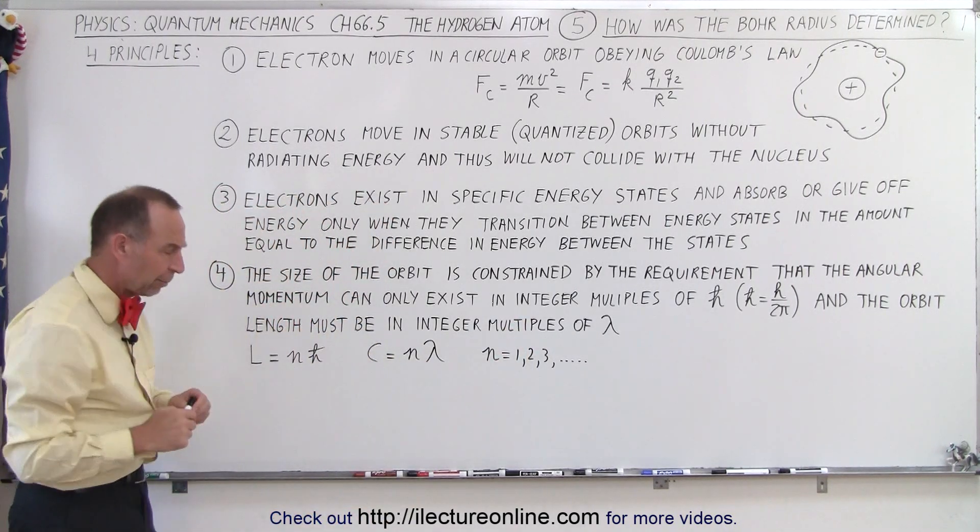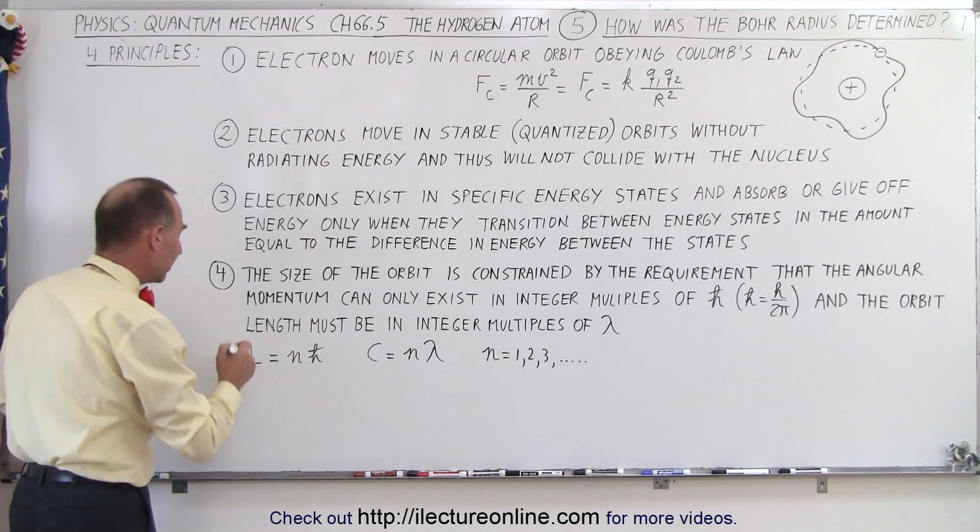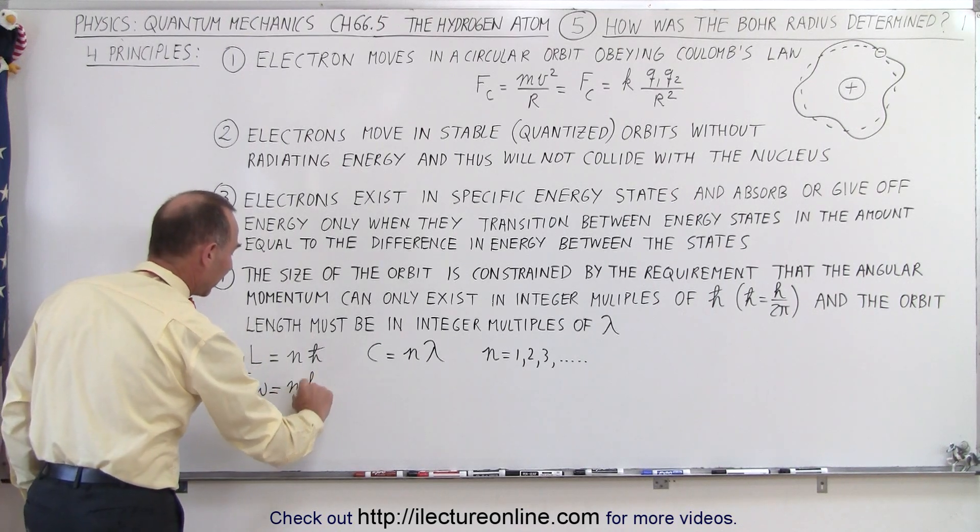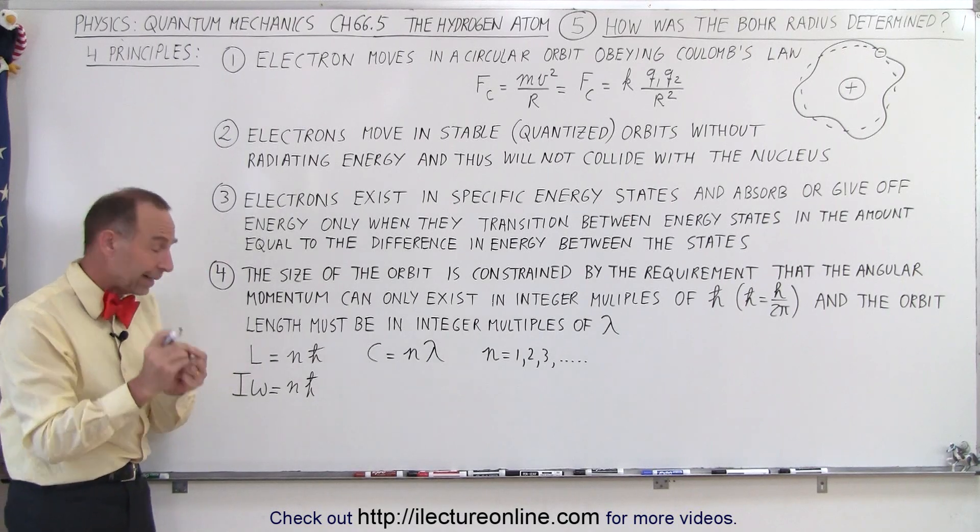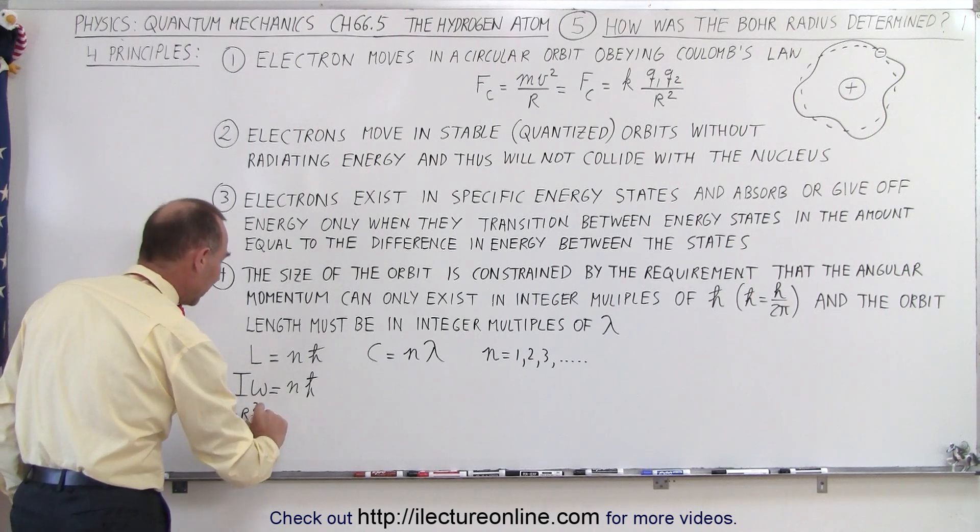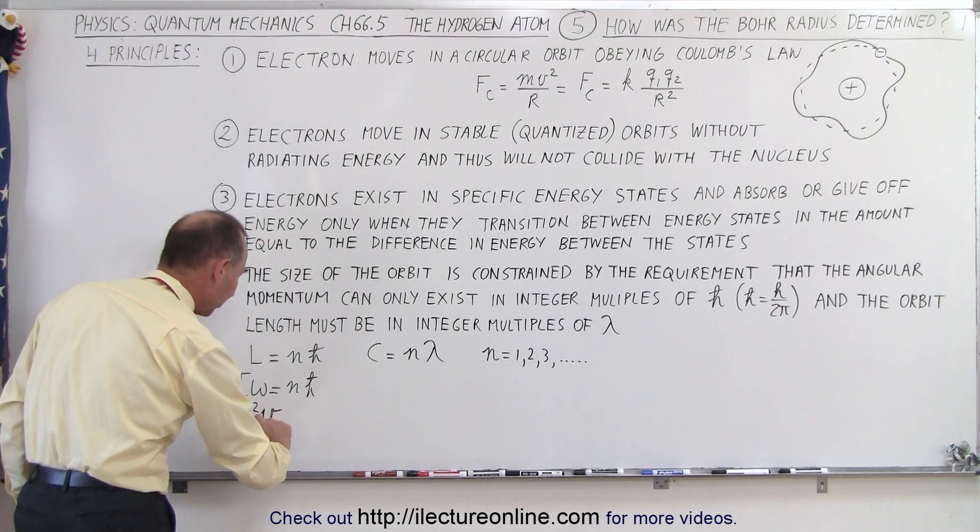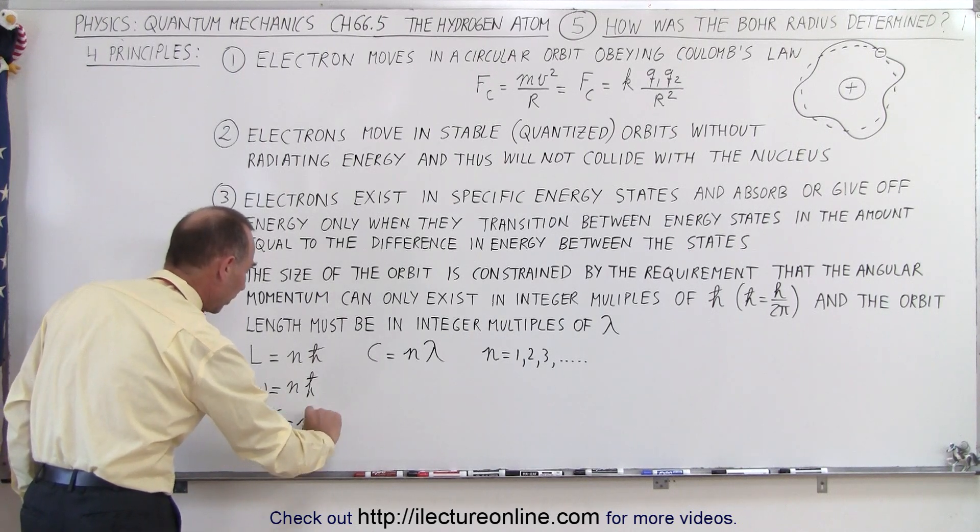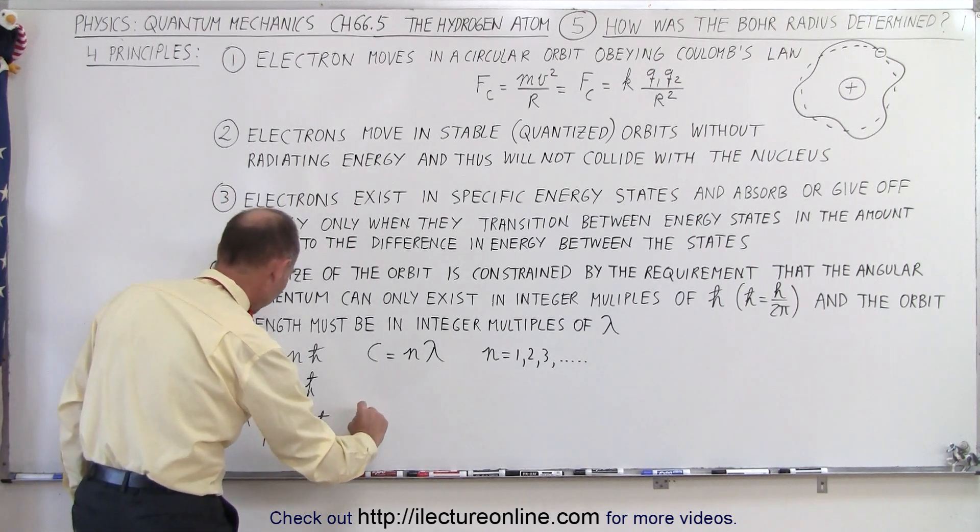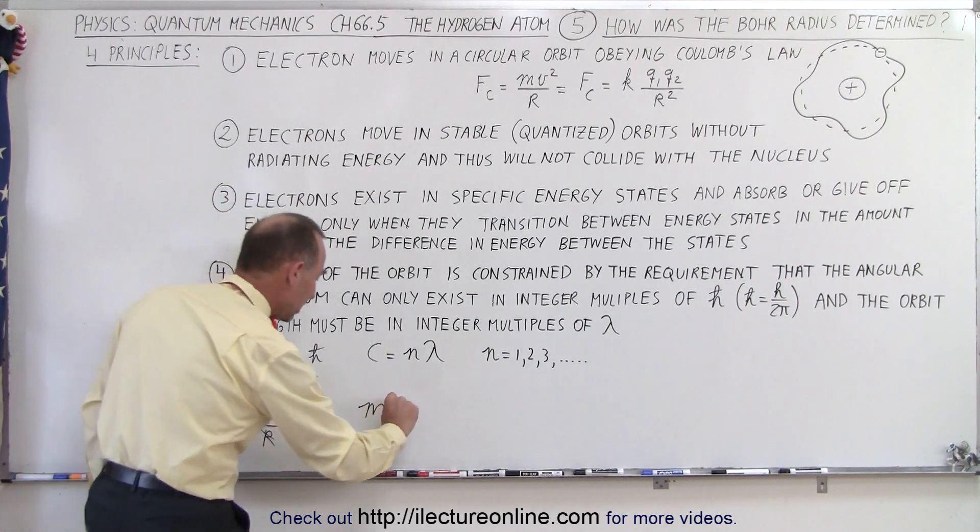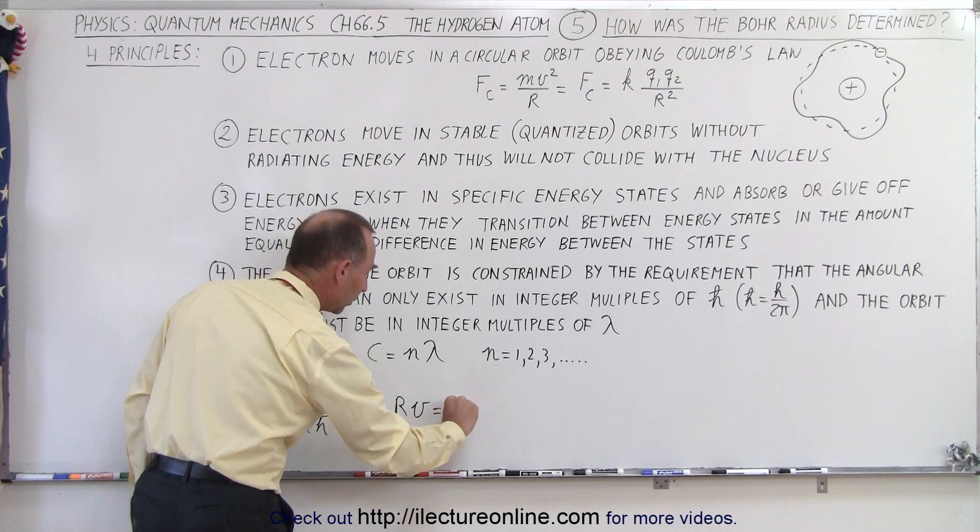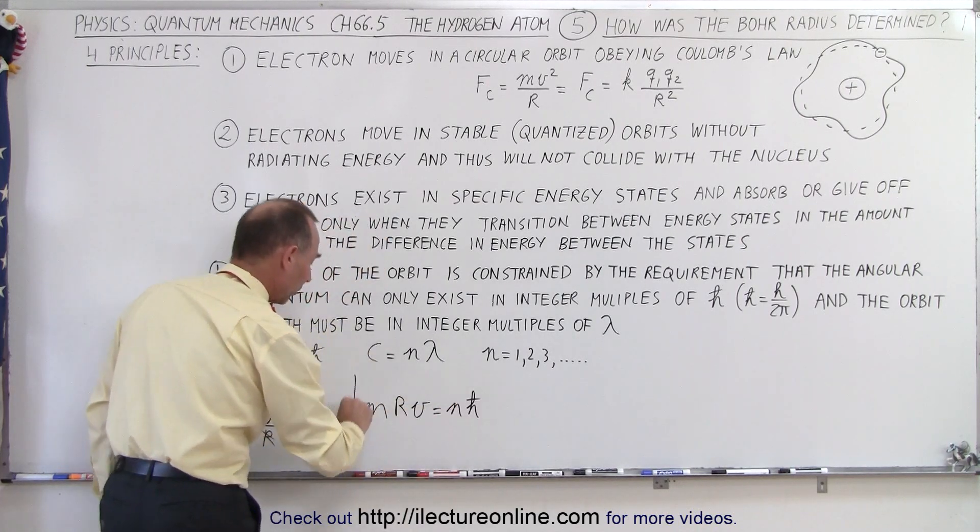Now if we take a look at these equations a little bit more, we know that the angular momentum can be written as the moment of inertia times the angular velocity, so that has to equal n times h-bar. For a point particle like an electron, the moment of inertia would be the mass times the radius squared, and omega can be written as v over r, the velocity divided by the radius, equals n h-bar. If we cancel this r with this r, we can see that the requirement was that mrv, the mass of the electron, the radius of its orbit, times its velocity must equal the integer number of h-bar. So that was one condition.